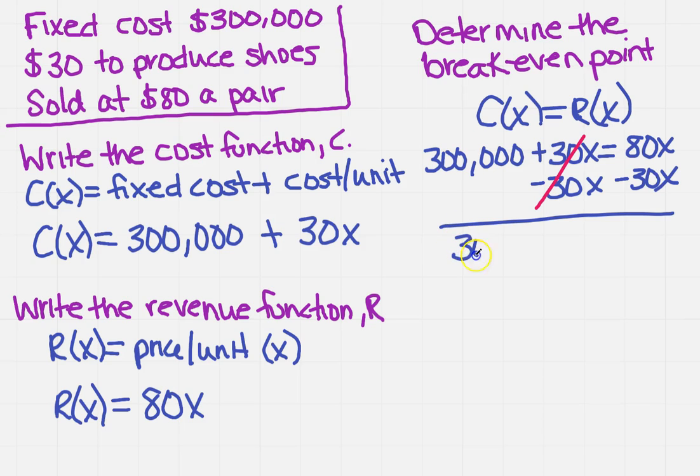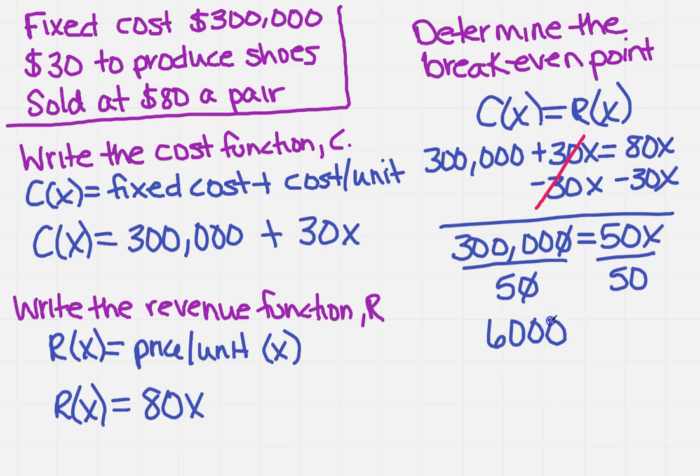And then I've got 50X on the right. So now I'm going to divide both sides by 50. I know right off the bat a zero and a zero are going to cancel, and then I'm going to get six thousand—sorry, I did take that zero off already—six thousand is equal to X.